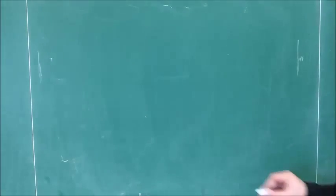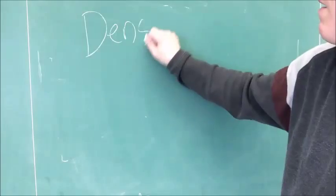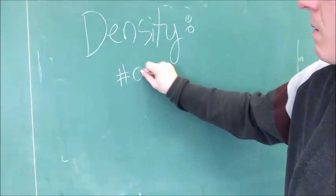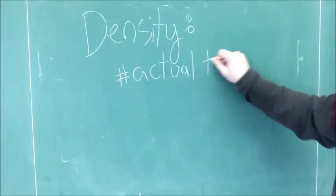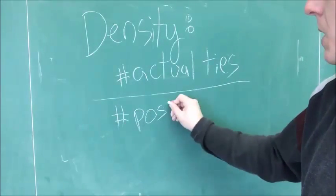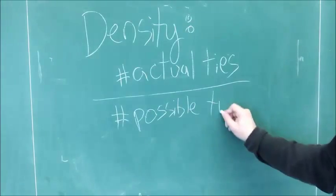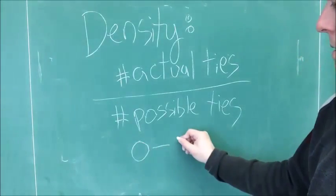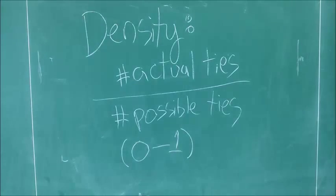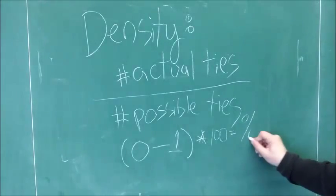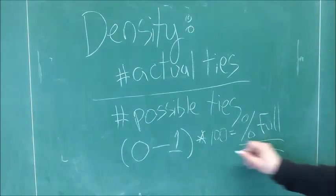Yet another property of a social network structure is density, which is a fraction, the number of actual ties divided by the number of possible ties. The number of actual ties can only be as large as the number of possible ties, and so, as a maximum, the value of that fraction is one, because any number divided by itself equals one. The number of actual ties could be zero, and if the number zero is divided by any number, it equals zero. Therefore, density varies between zero and one, multiply that by 100, and you get the percent full of a network.